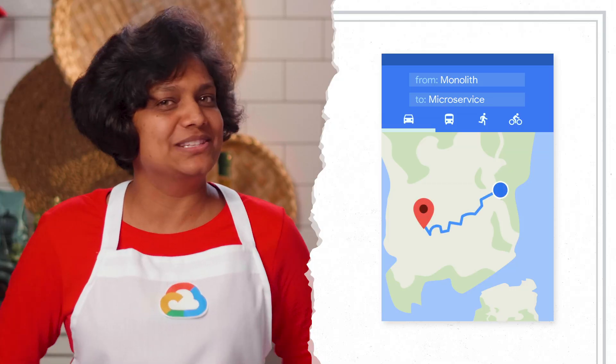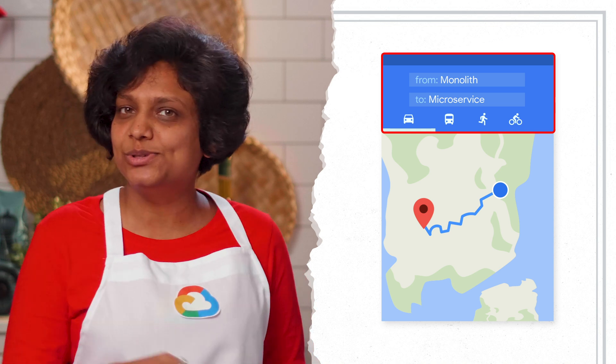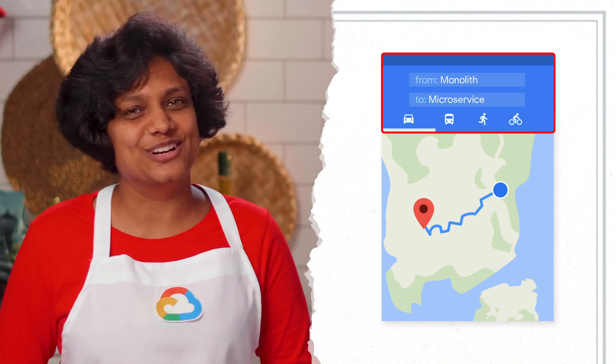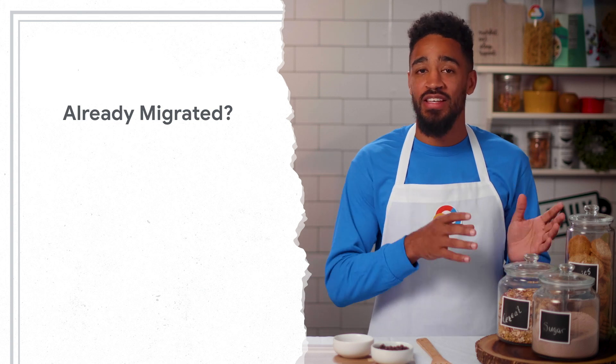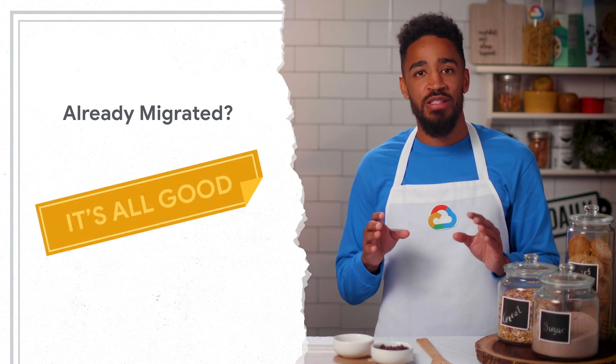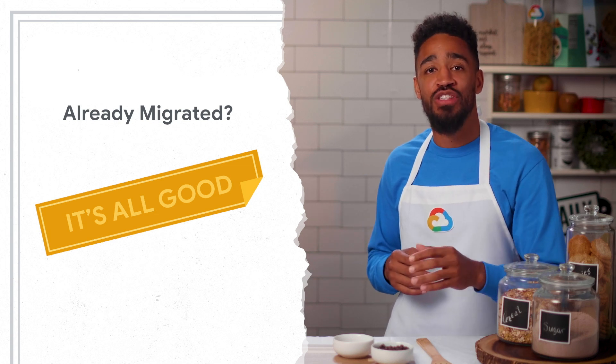To help simplify that process, and because with any recipe it's important to know what the end result is going to look like, let's map the path from a monolithic on-premise application to an application that's fully hosted on Google Cloud Platform and built with microservices. If you have already migrated your monolithic application, as is, into the cloud, then the same steps we discuss here can be applied to create a microservices architecture.